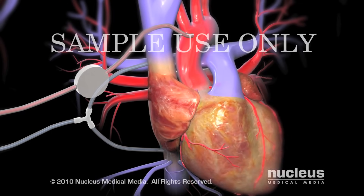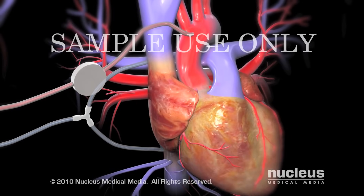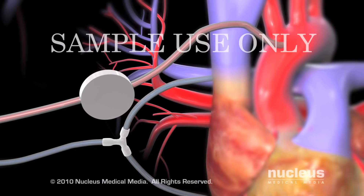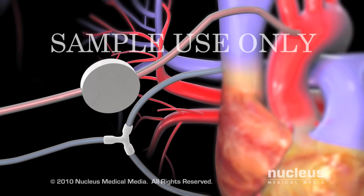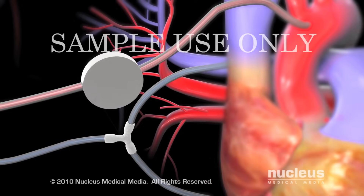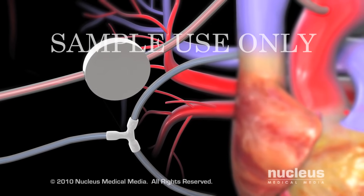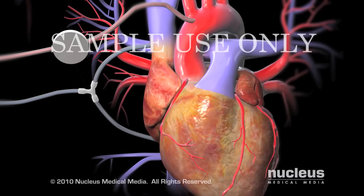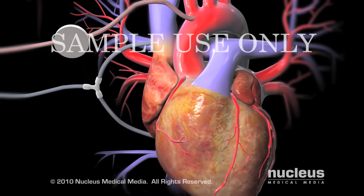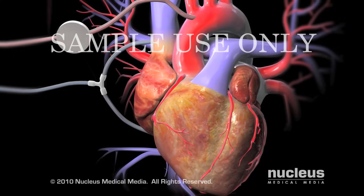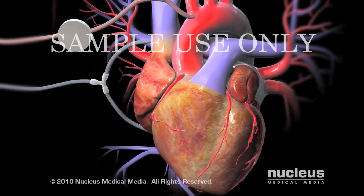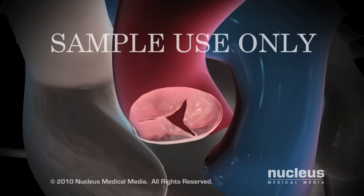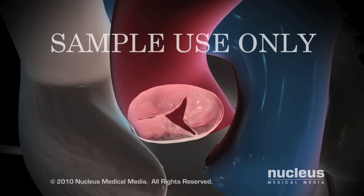At this point, your heart will be connected to a heart-lung machine. Tubes are used to re-route your blood into this machine, which takes over the functions of the heart and lungs during the operation. Once the heart-lung machine has taken over, your heart will be temporarily stopped and the blood inside removed. This keeps the aortic valve still and allows your surgeon to see it.